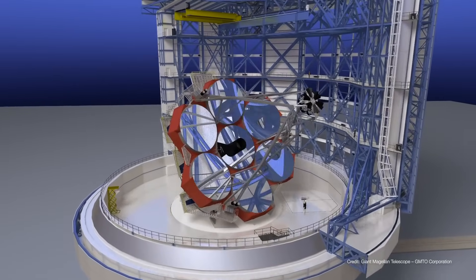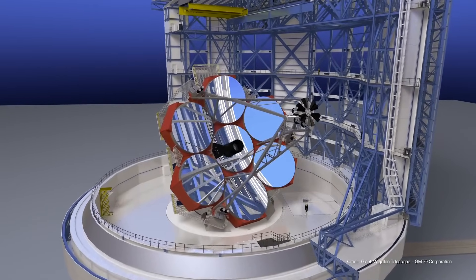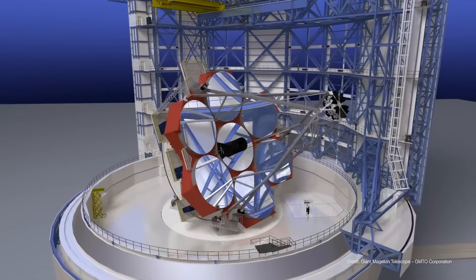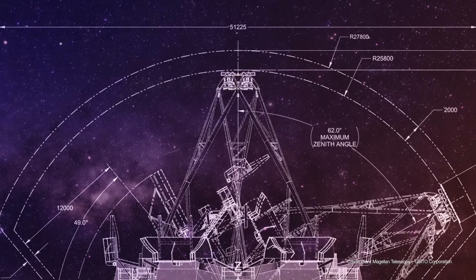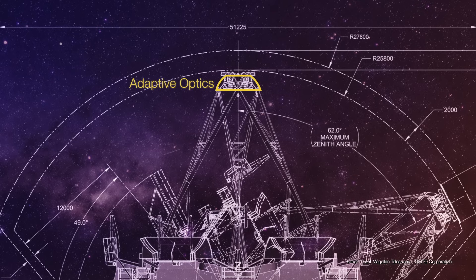Its secondary mirrors are thin, and have actuators that warp and deform them to correct for the effects of the atmosphere in real time. This is called adaptive optics, and GMT will have the most advanced adaptive optics system ever developed.